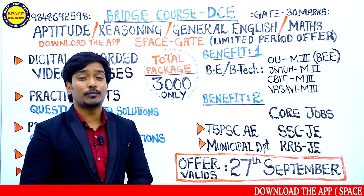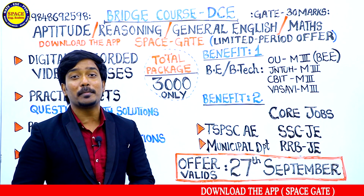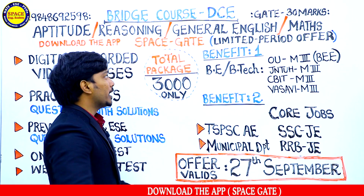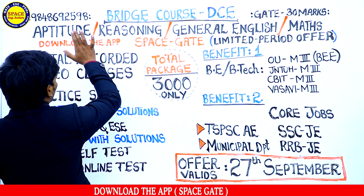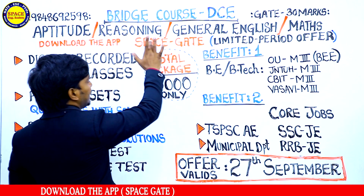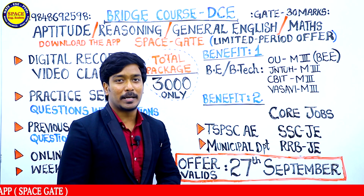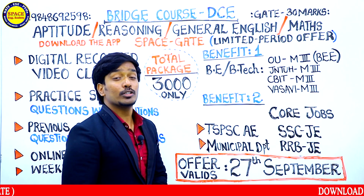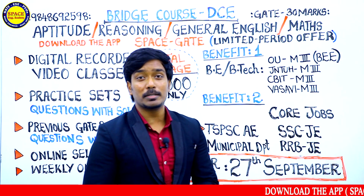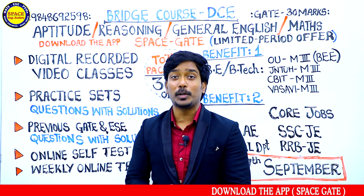Bridge codes — first of all, four topics we have to discuss: aptitude, reasoning, English, and GATE Mathematics. The most important thing about the BIS course, what you need to remember,